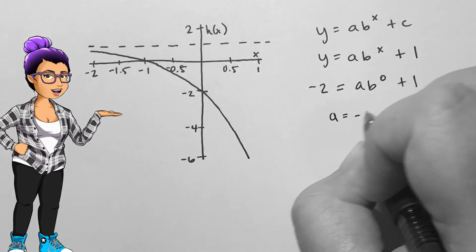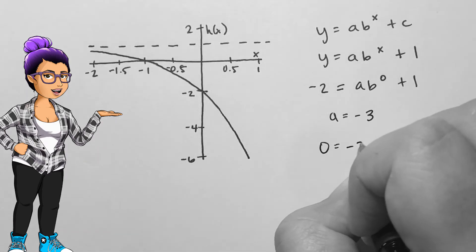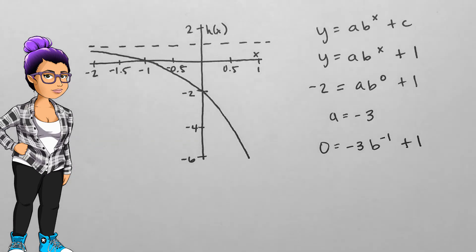I can use this point, 0, negative 2, to find the a value, since b to the 0 power is 1. The a value will be negative 3.